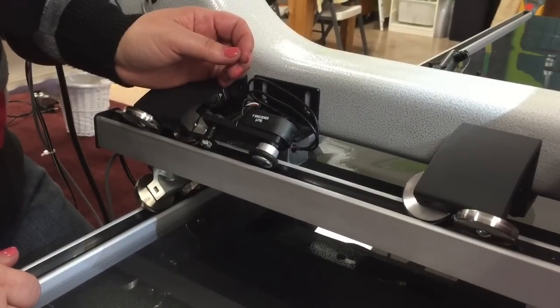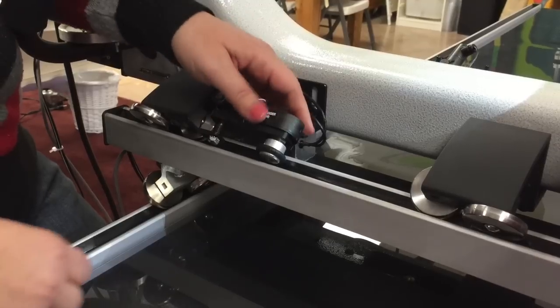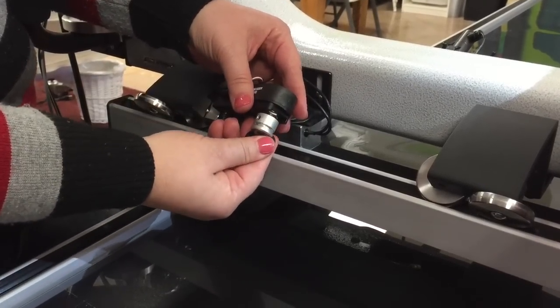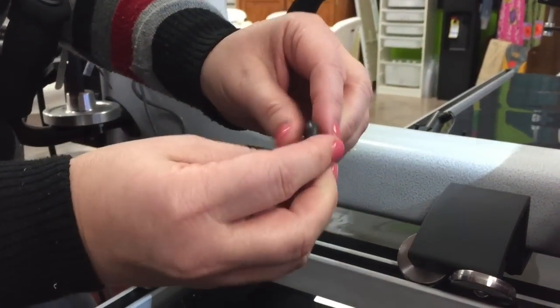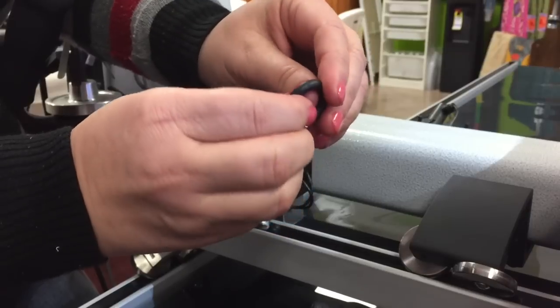First we're going to change the encoder O-ring on the encoder that's attached to the head. You're going to lift up your encoder and just roll it off. Now you'll notice that this encoder is cracked. You can see that when it's actually on the encoder.